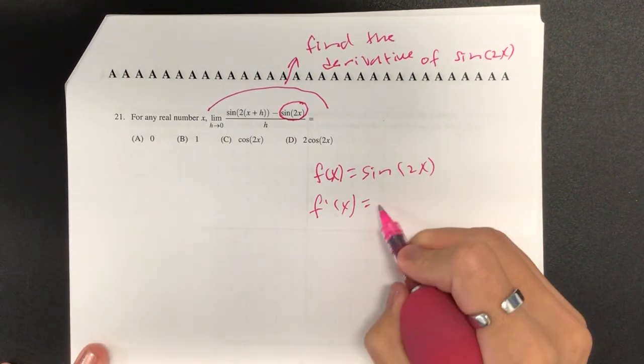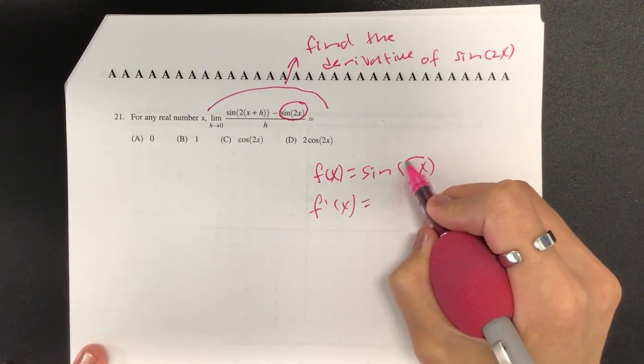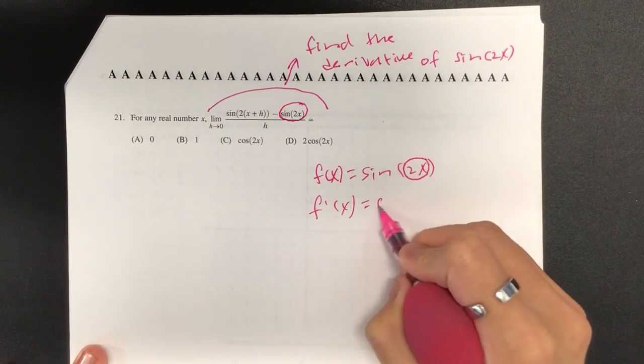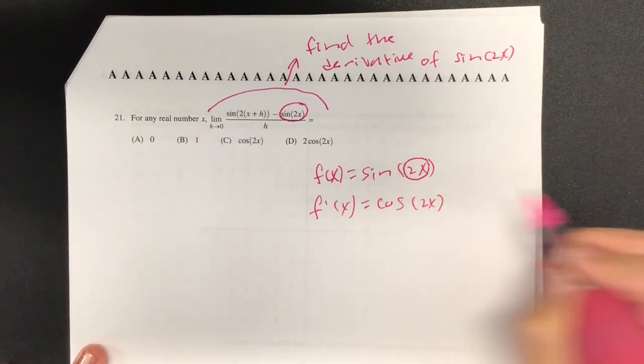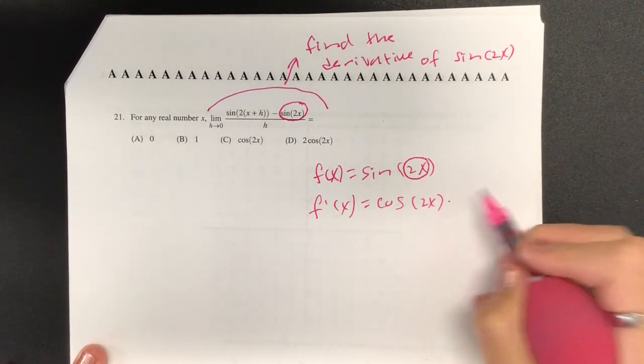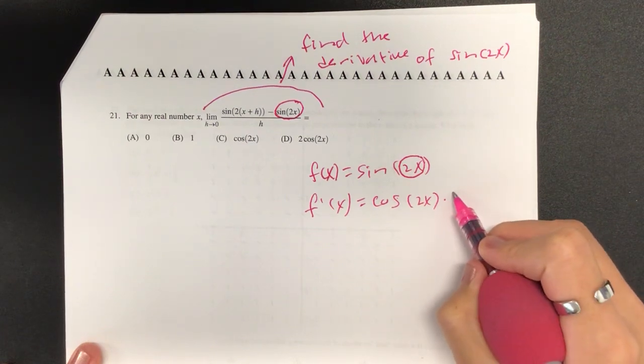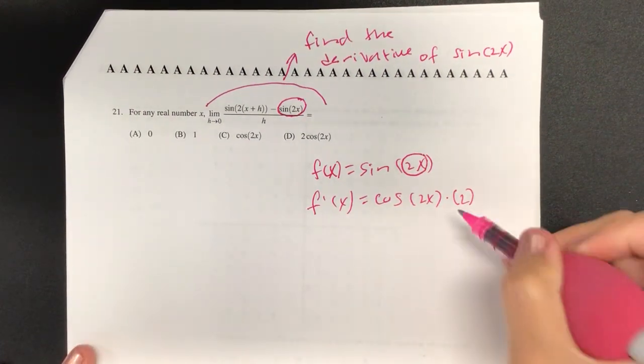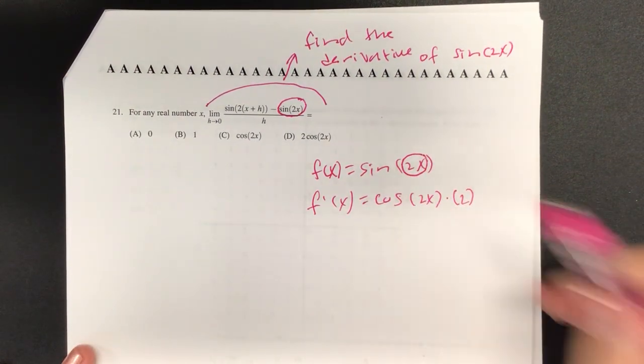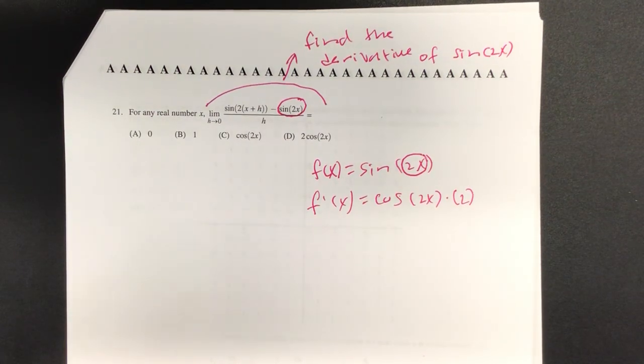Sine derivative is what? Cosine. And that's going to be chain rule again, right? I'm not going to mess with that. Cosine of the argument. And then we derive that inside, which is simply what? 2. And this 2 could be the coefficient at the very beginning. So which one has it? D.